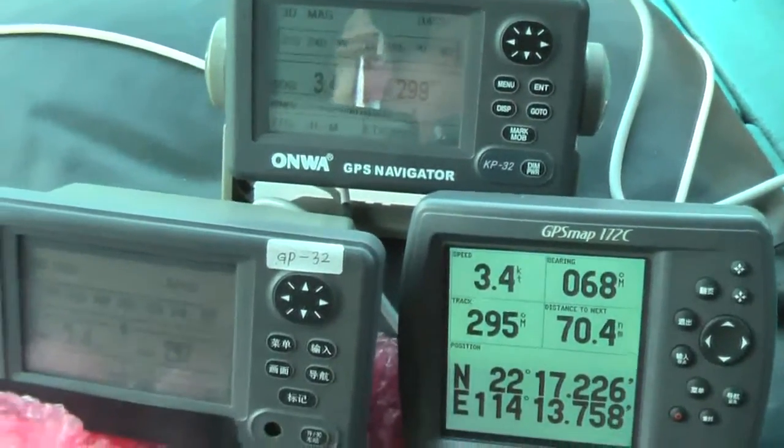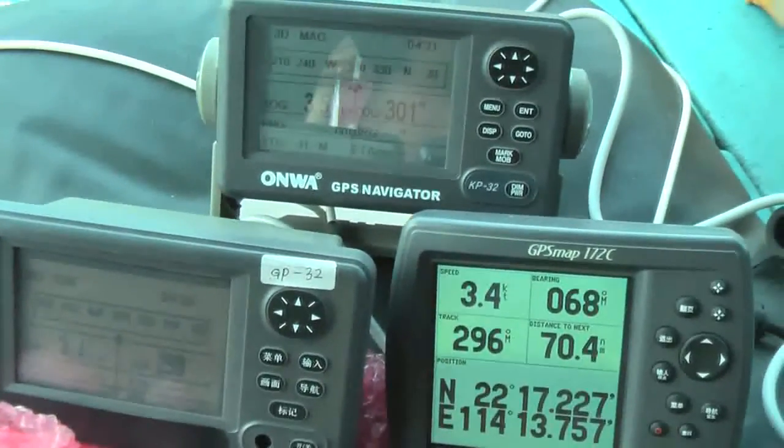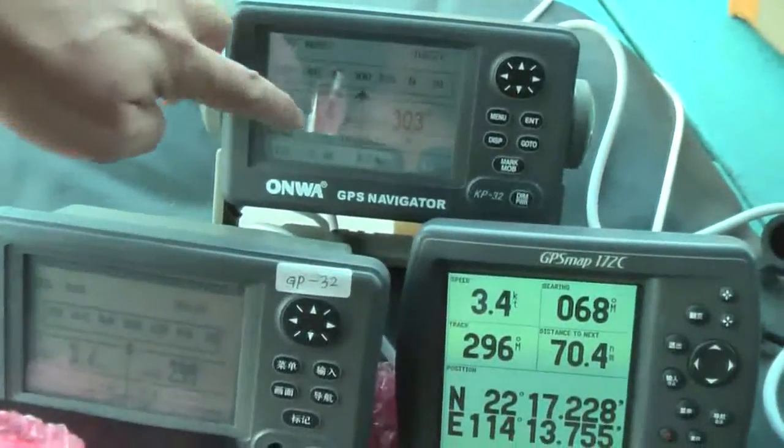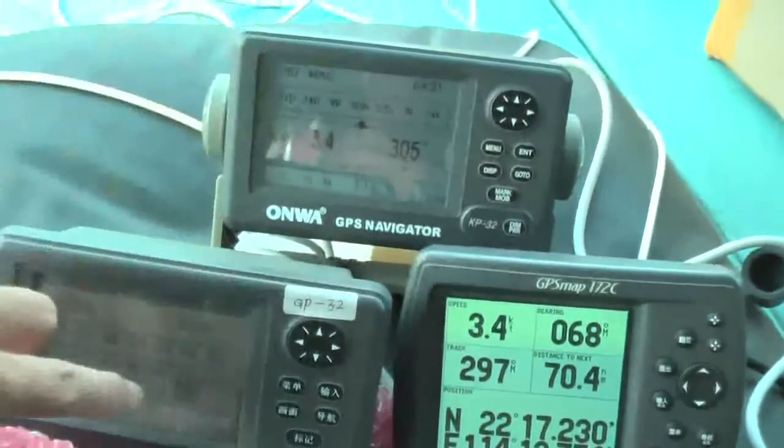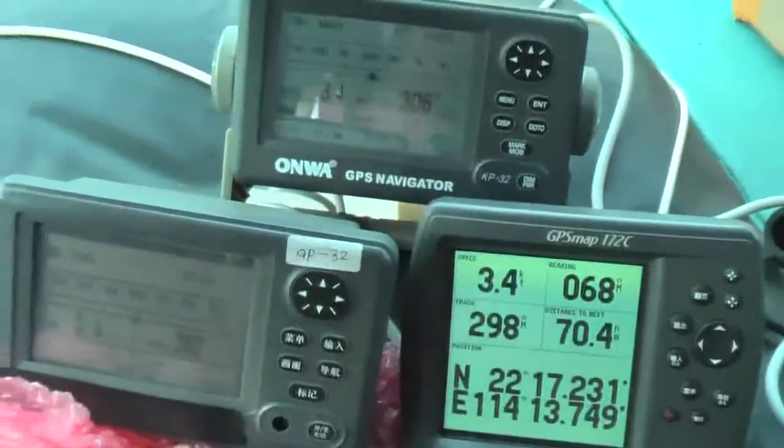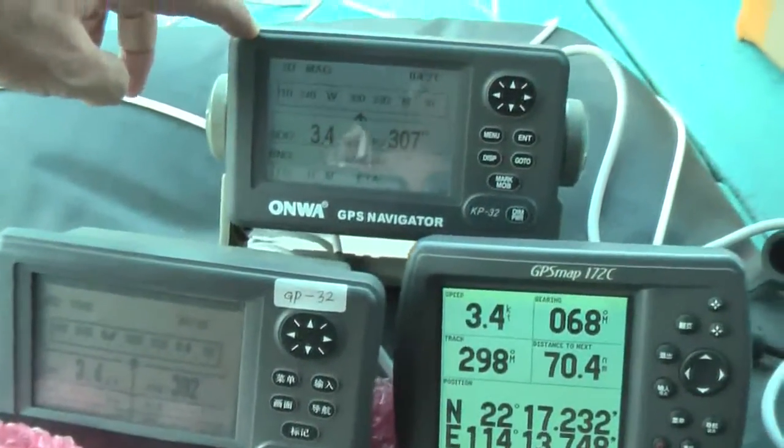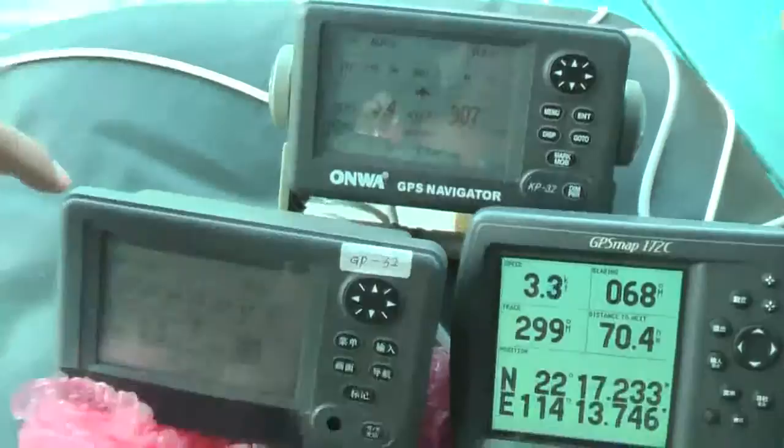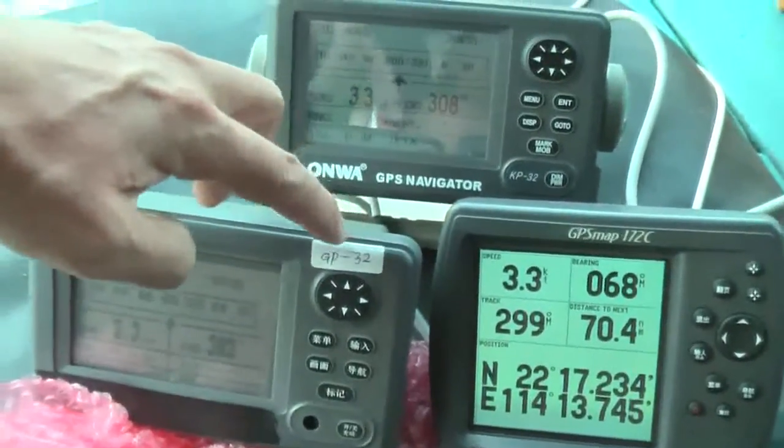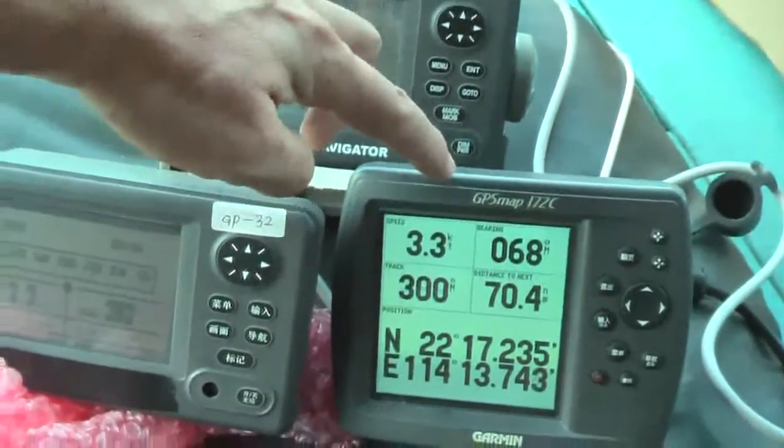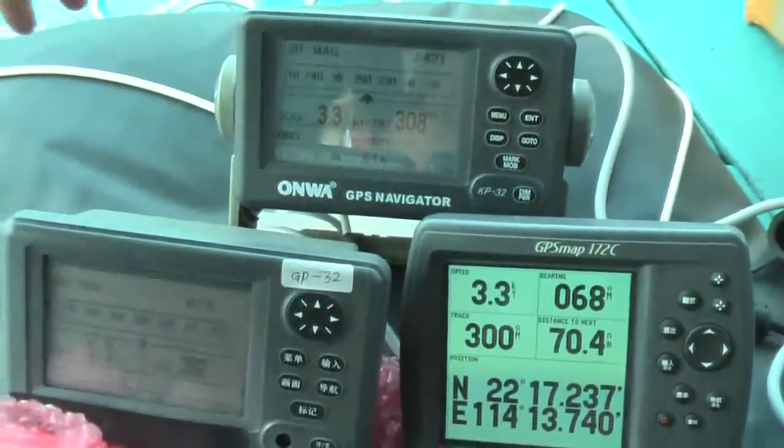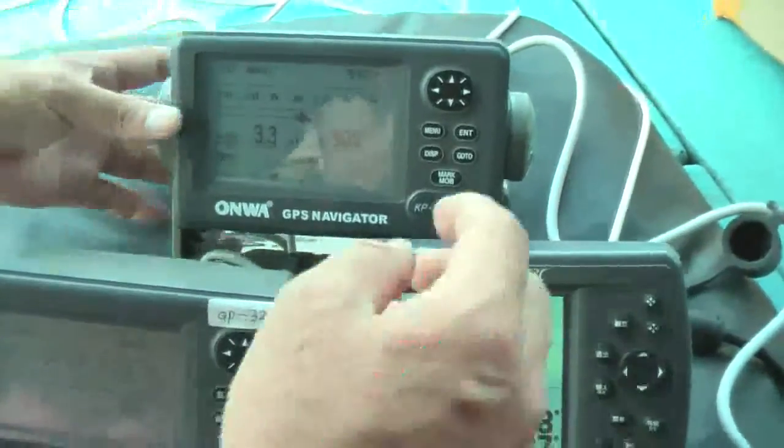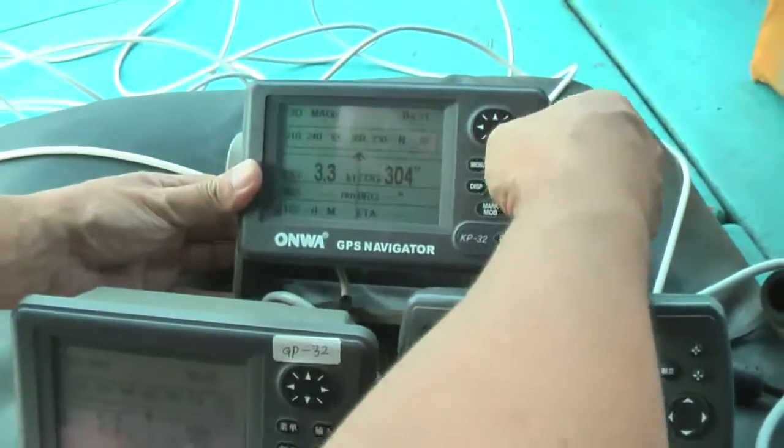Today we do the sea trial to compare the speed and COG of ONWA KP-32, Verano GP-32, and GAMI 172C. And we check the setting of every unit.